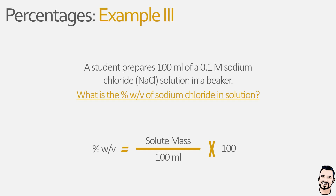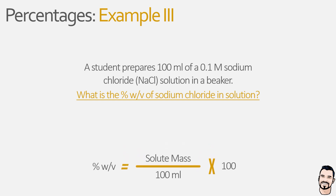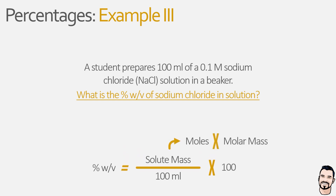For those that do know, our solute mass is equal to the number of moles multiplied by the molar mass. Based on the information we have been given, we don't know the number of moles directly, but we can calculate this — the number of moles equals the molarity multiplied by the volume in litres. We have now reached a point where we do know the required information and can start to sequentially complete each of these calculations.